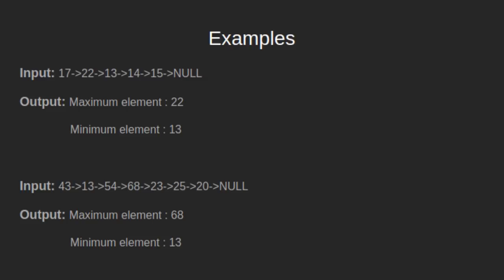In the second example, we have a linked list: 43, 13, 54, 68, 23, 25, 20, null. Here the maximum element is 68 and the minimum element is 13.